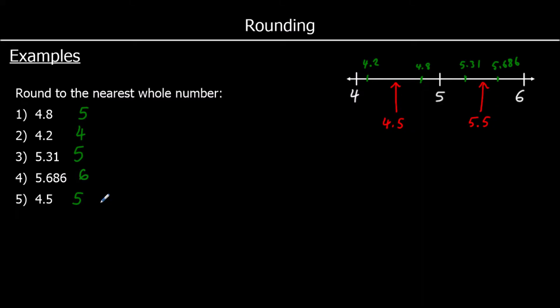So let's look at a rule for rounding. When we're rounding to the nearest whole number, we look at the next digit down — the one after the decimal place. That's going to be our key number, our important number for rounding. And if it's 5 or above, we're going to round up.